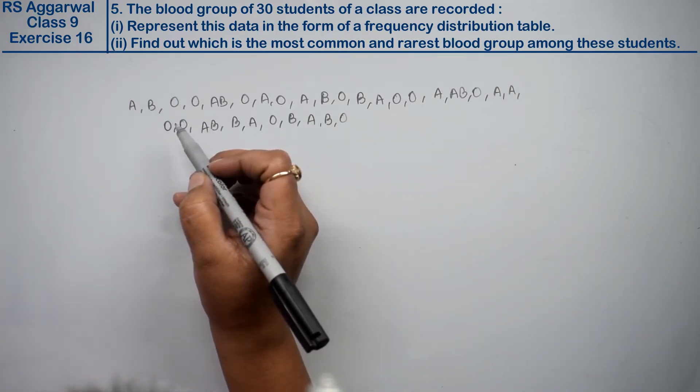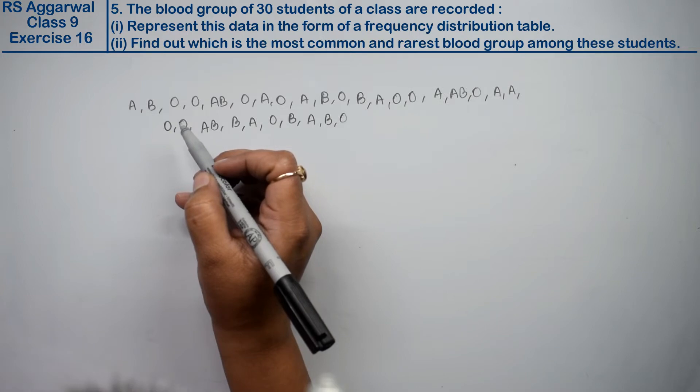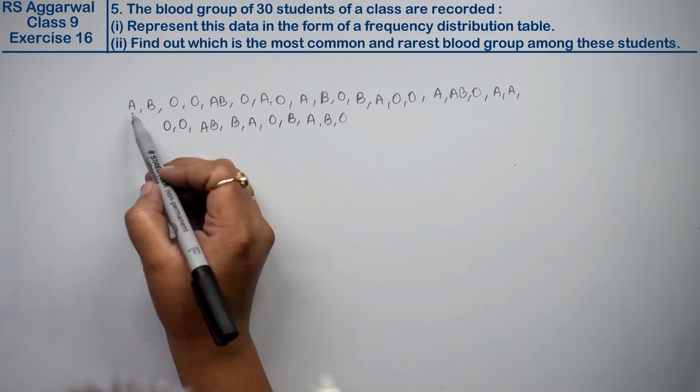What do we do in the first part? Represent this data in the form of a frequency distribution table. Friends, let's count one time if there are 30 or not.